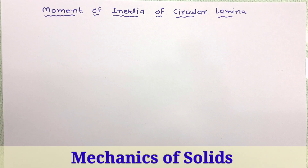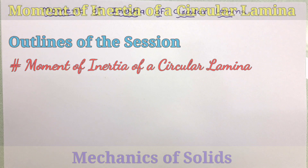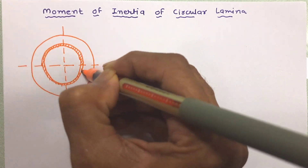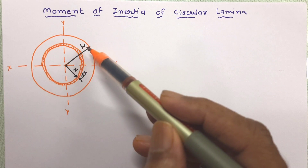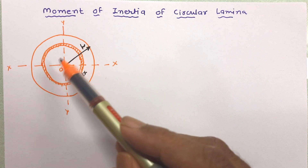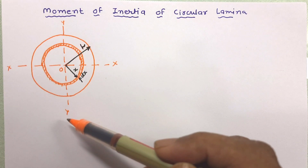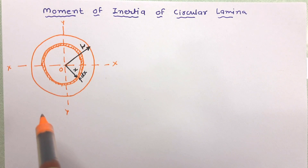Welcome to the lecture series of Mechanics of Solids. In this lecture we are going to derive an equation for moment of inertia for a circular lamina. In the figure, this is a circular lamina having radius R, where O is the center. We want to work out the moment of inertia about its XX and YY axes, but we will start first with the ZZ axis, which is also called the polar moment of inertia.